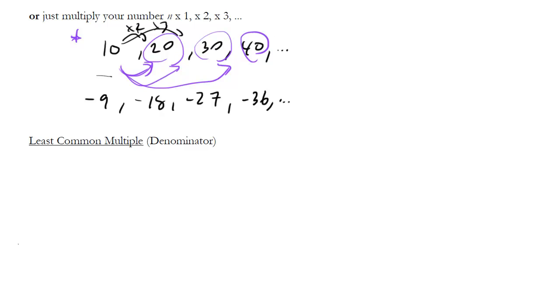So for instance, if I have 6 and 10, what are the multiples of 6 and 10? Well for 6, it's 6, 12, 18, 24, 30, 36. For 10, it's 10, 20, 30, 40, 50.